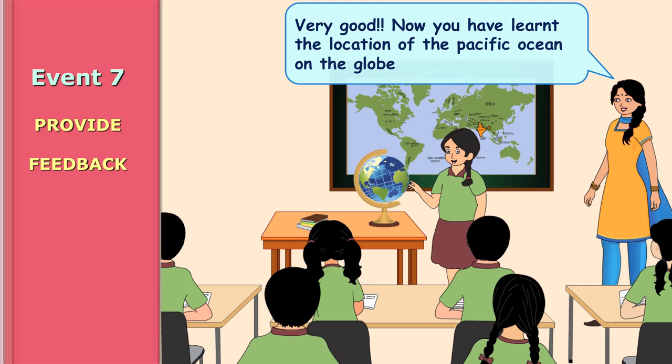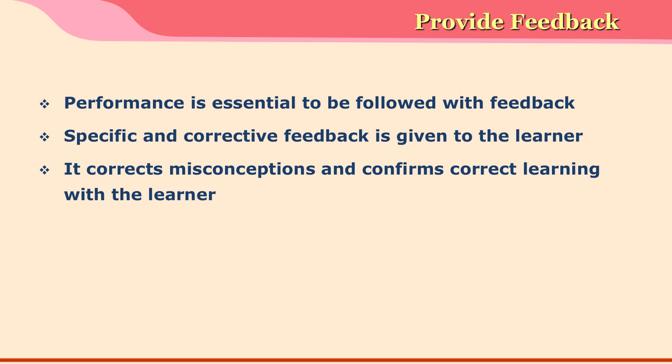The seventh event is provide feedback. After the learner has performed, it is imperative that they receive feedback from the teacher. This event gives the teacher an opportunity to provide corrective feedback, correct misconceptions, and confirm learning. The feedback can be given by the teacher, or it could be kinesthetic feedback received by the learner on their own. At this point, the teacher may feel the need to re-teach in order to correct misconceptions or lacunae, so the learner may go through the previous two events again.